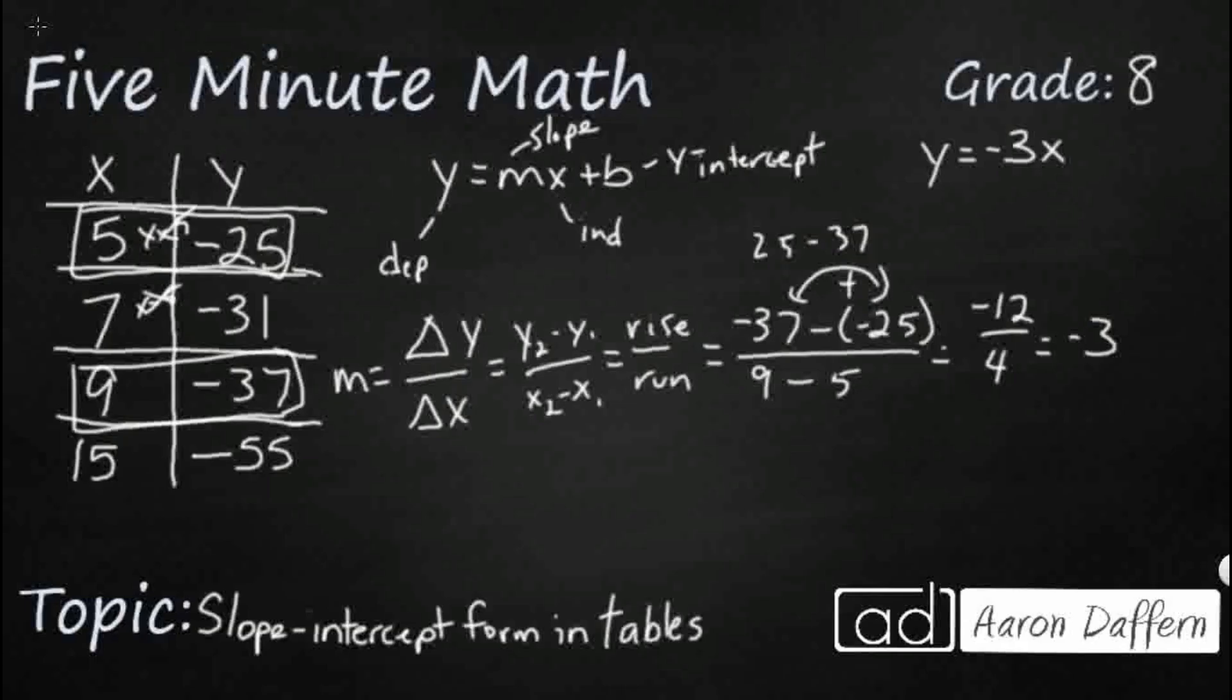So my y is negative 25. So I'm going to plug this back into my slope-intercept form. Negative 25 equals my slope is negative 3. My x is 5. So you see how I pulled out my 5 and negative 25 and put them right here. And then I just need that b. That's what I'm trying to isolate. So I've got negative 25 equals negative 3 times 5 is negative 15.